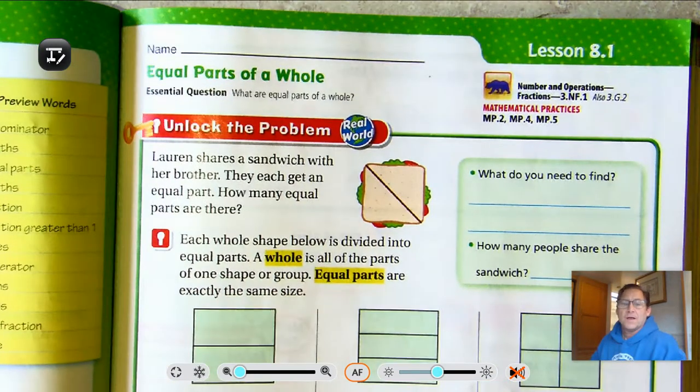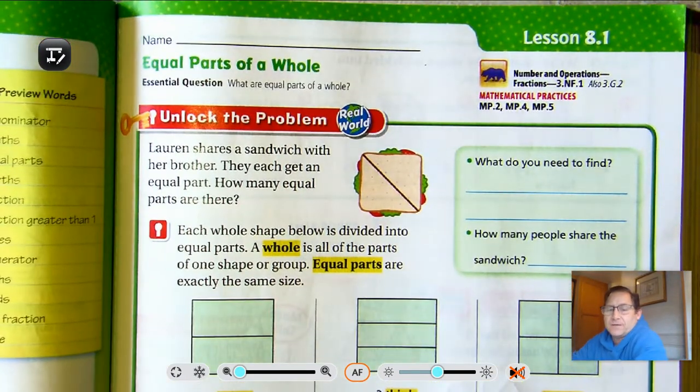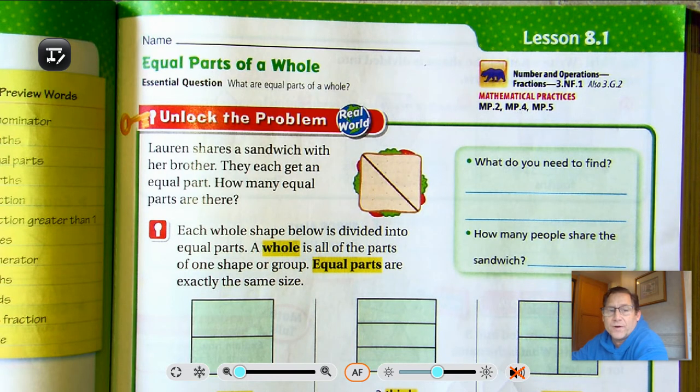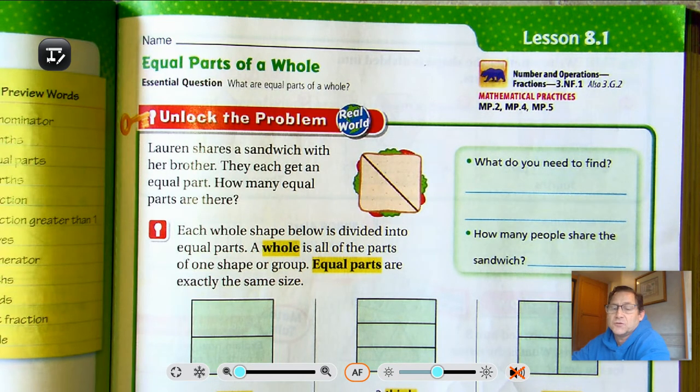Hello, everybody. Alright, so we're going to begin our discussion and learning of fractions. We're on lesson 8.1 on page 321 of the third grade GoMath textbook. And our title is Equal Parts of a Whole. And an essential question that you should be able to answer at the end of this lesson is, what are equal parts of a whole?